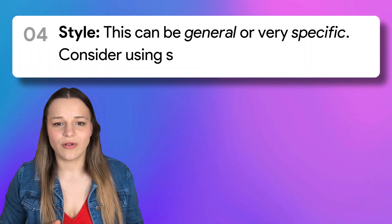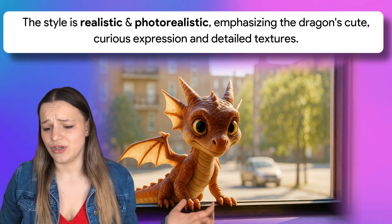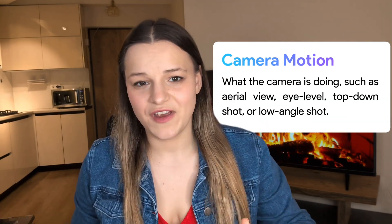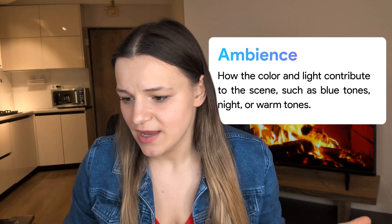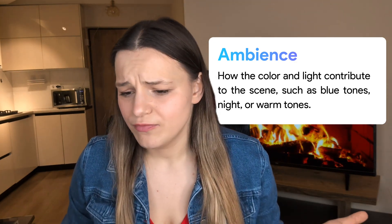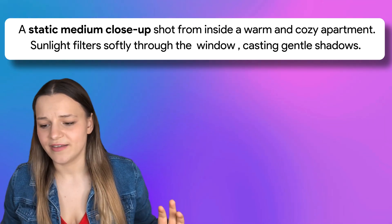Last, we've got the style — this could be general or very specific. I'm going to say highly realistic and photorealistic, emphasizing the dragon's curious expression and detailed textures. We've also got optional factors that are equally important: camera motion — what the camera is doing, like following the subject, aerial view, or eye level; composition — how the shot is framed, close-up or from far away; and ambience — how color and light contribute to the scene, like blue tones, night, or warm tones. I'll set the camera to static, medium close-up shot, with sunlight filtering softly through the windows, casting gentle shadows.